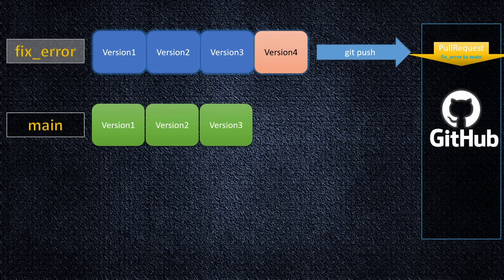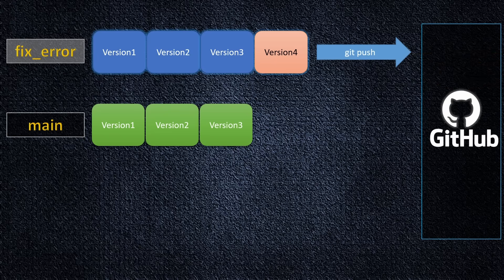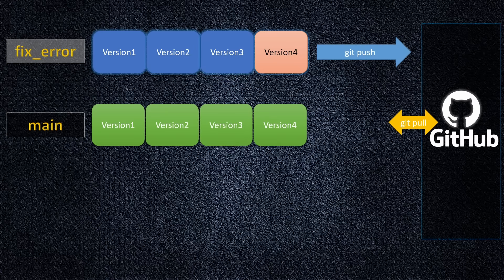When it's approved and looks good, my branch is merged to GitHub. Only after it's merged can it be deleted from GitHub. Then, to get the updates, I switch to the main branch on my local computer and execute git pull. After that, I can delete the local branch as well.